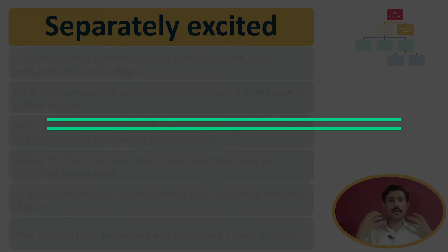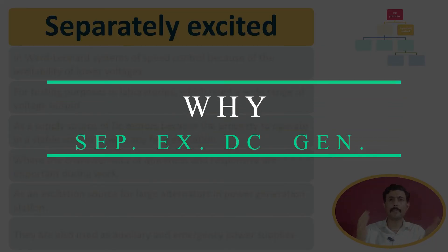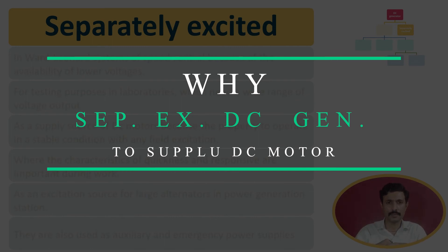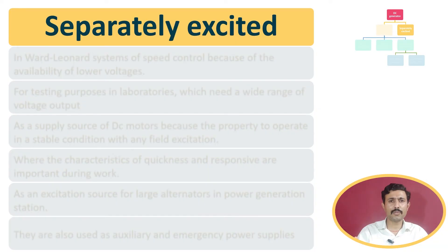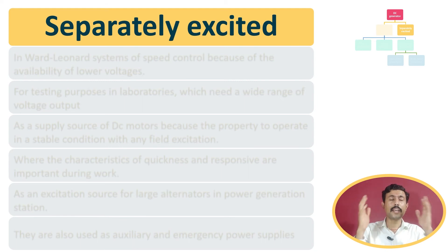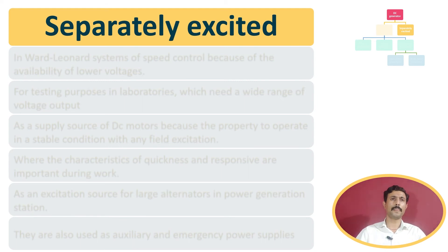The question is: why is separately excited DC generator used in supplying a DC motor? Write the answer to this question in the comment section below. I have taught this in this video, so just think, imagine, and write your answer in the comments.